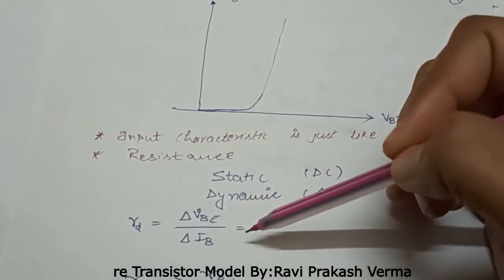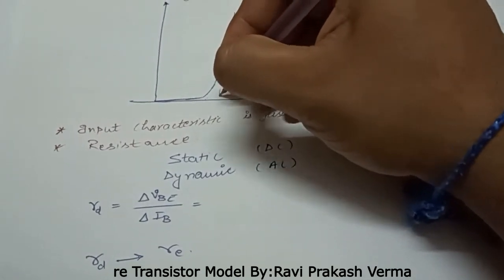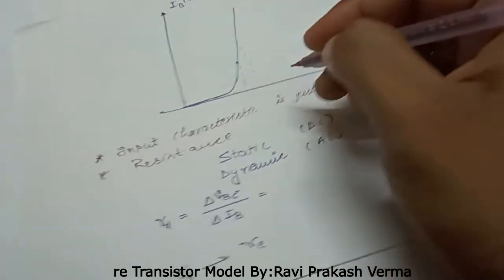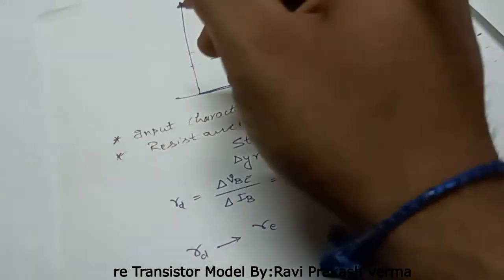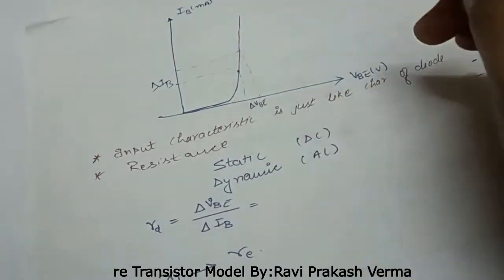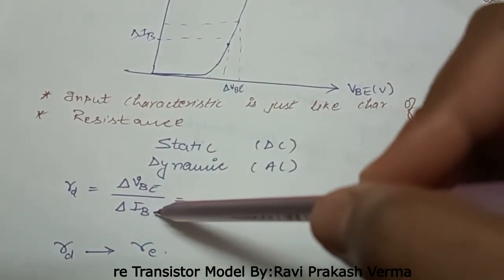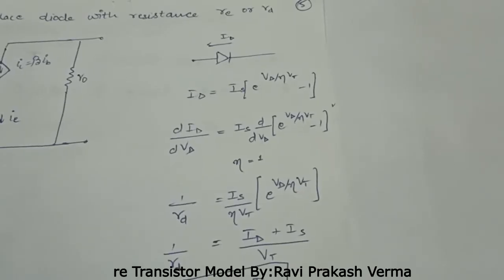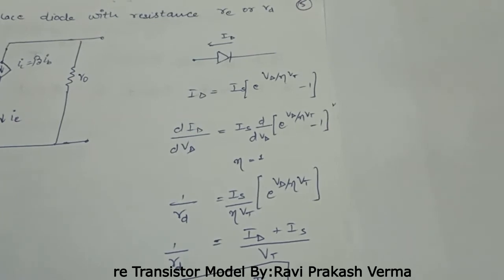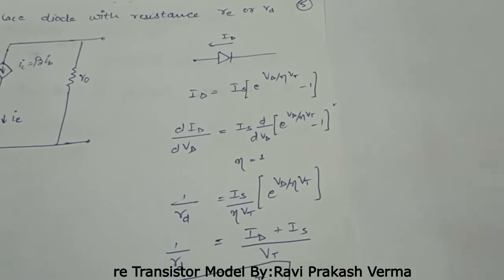The dynamic resistance Rd equals the change in base-emitter voltage with respect to the change in base current: Rd = ΔVBE / ΔIB. We know that the current flowing through a diode is given by the diode current equation: Id = Is · e^(Vd / η·Vt) − 1, where Vd is the forward voltage, η is the ideality factor, and Vt is the thermal voltage.